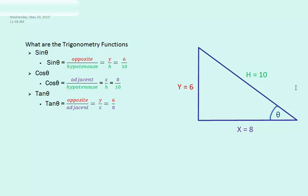Then finally we have tan theta. Tan theta is opposite over adjacent, or y over x, or we can write it as 6 over 8.